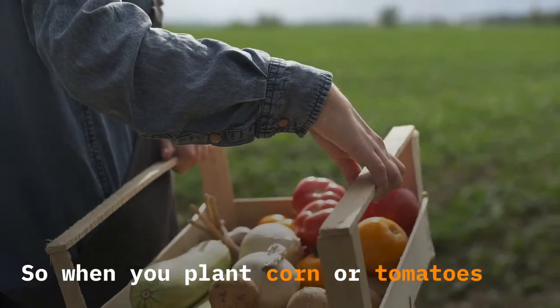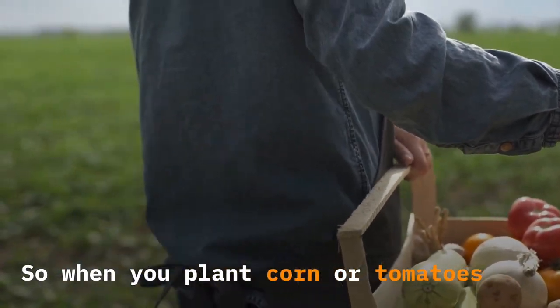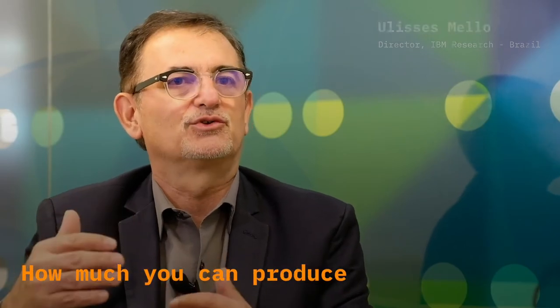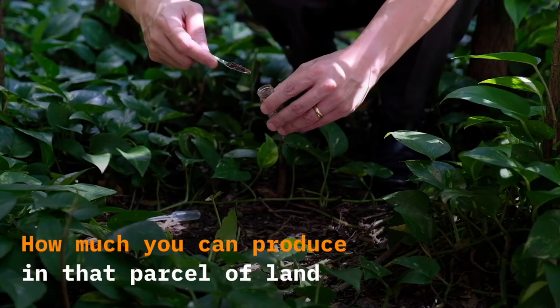So when you plant corn or tomatoes, there is always what we call the genetic potential, how much you can produce in that parcel of land.